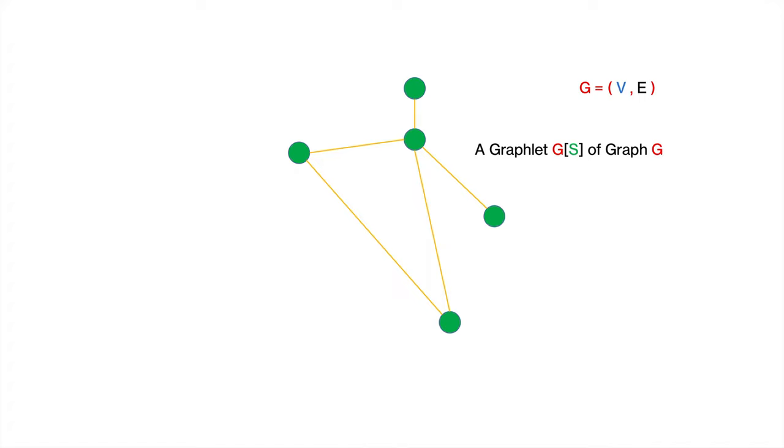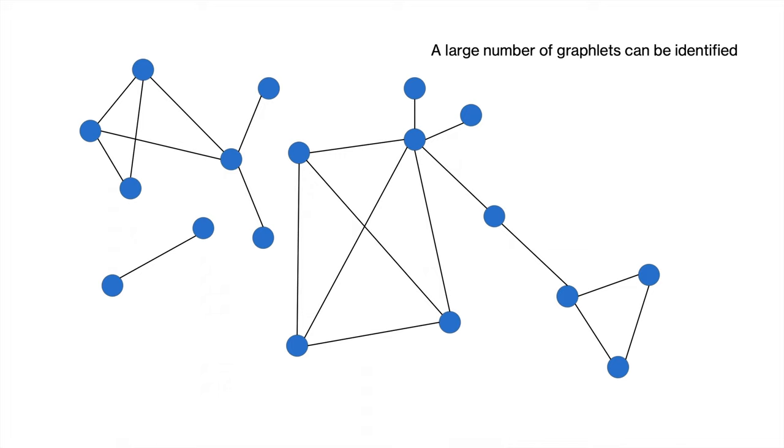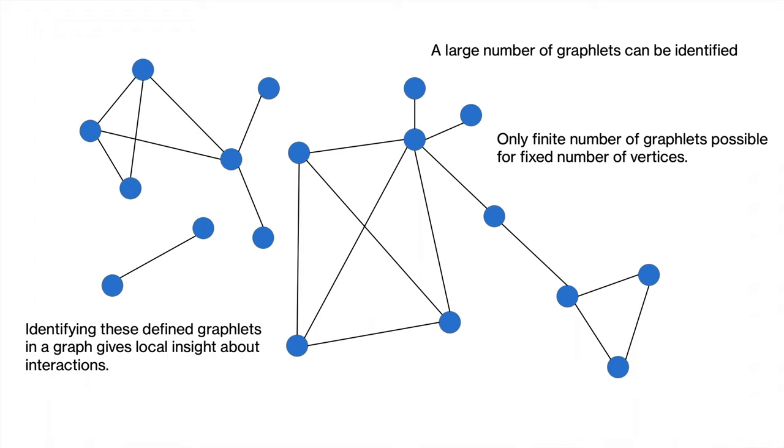We can find a large number of graphlets in a graph. For a fixed number of vertices, we can get only a finite number of possible graphlet structures. Once we identify these defined graphlets in a graph, it gives a local insight about interactions. Also, characterization of the entire network is possible by finding the abundance of various graphlet structures.